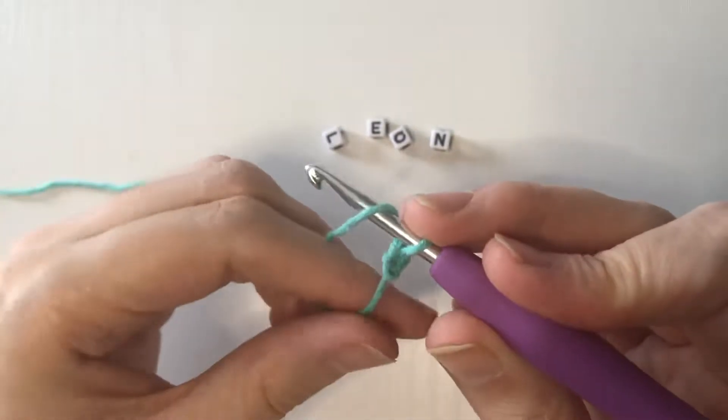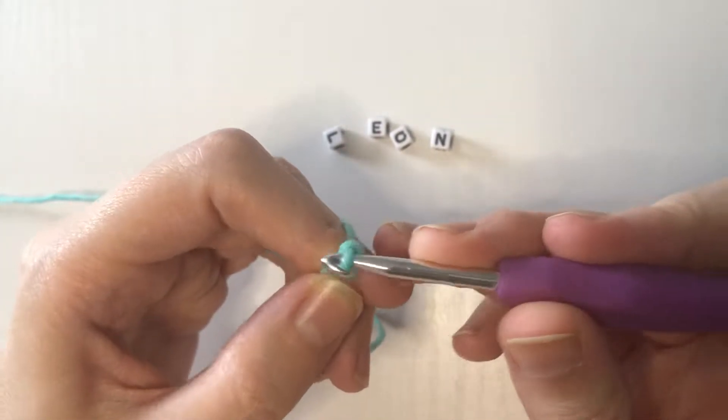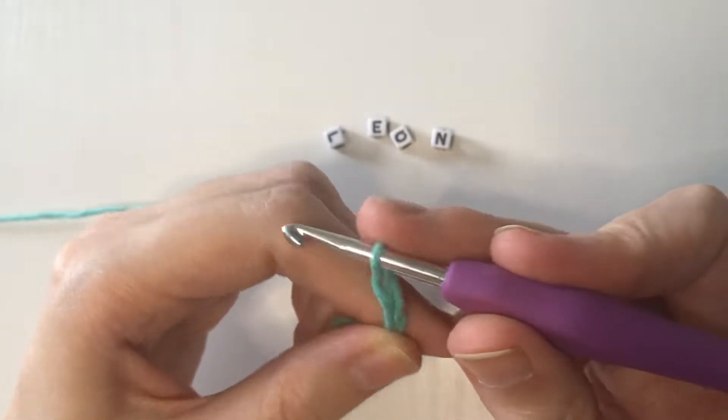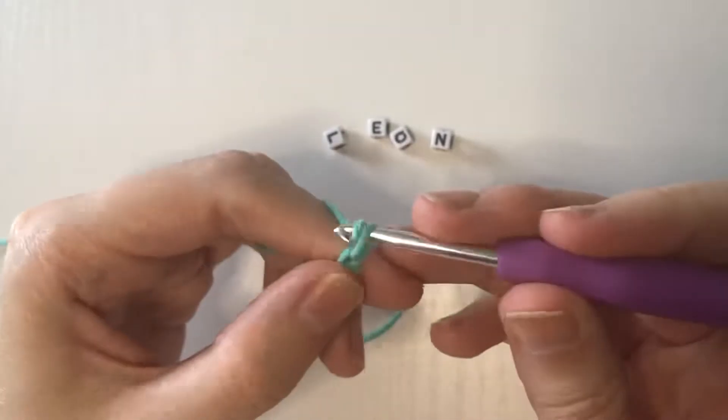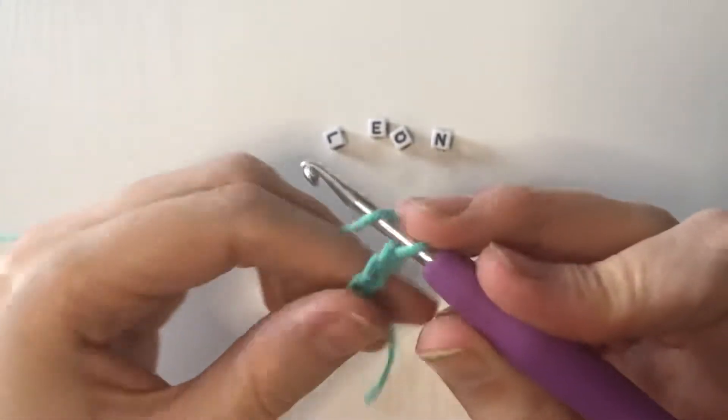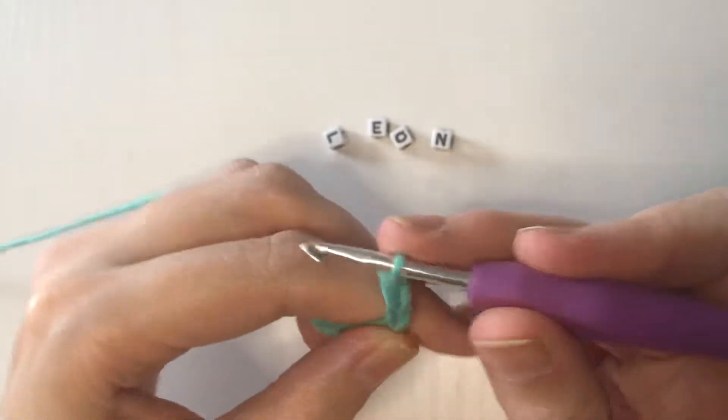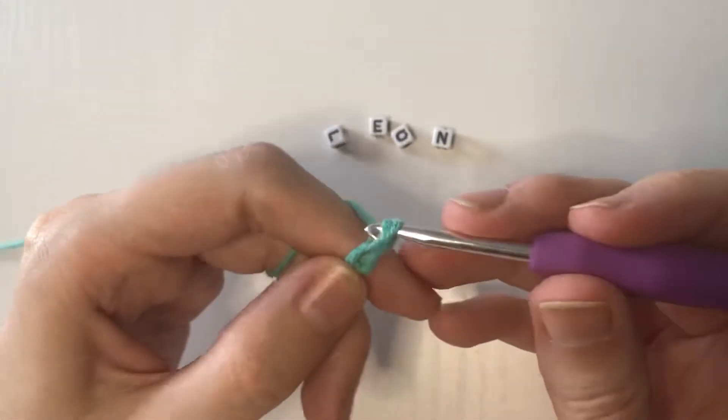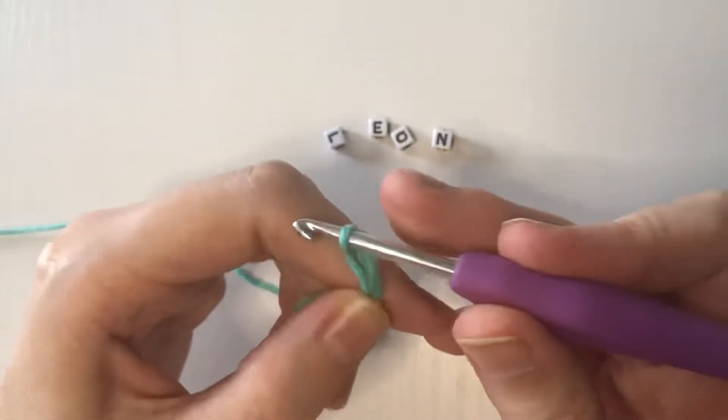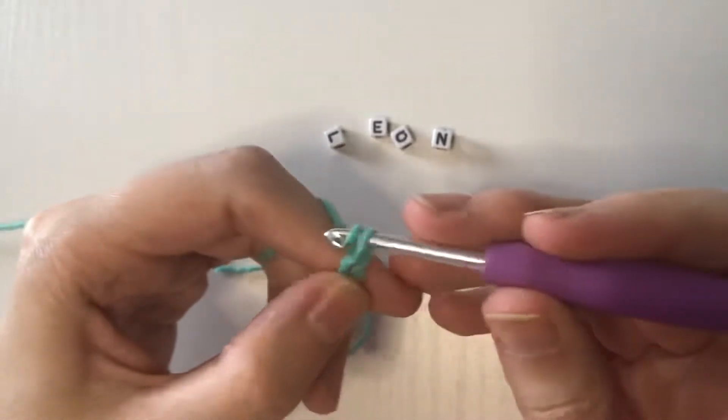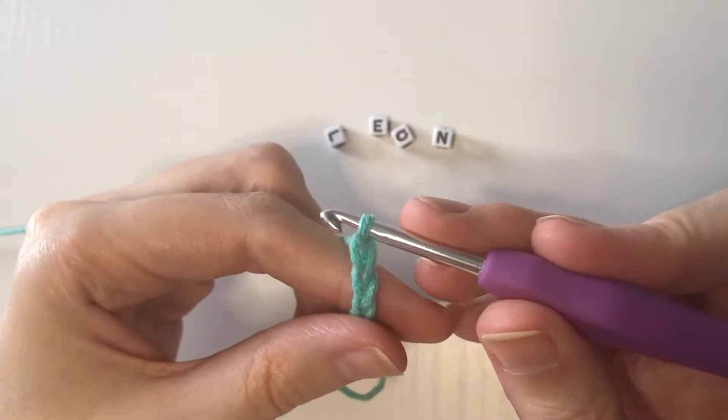So we're gonna go yarn over pull it through one, yarn over pull it through two, yarn over three, yarn over four, yarn over five, yarn over six, yarn over seven, yarn over eight, nine, and then we have ten.